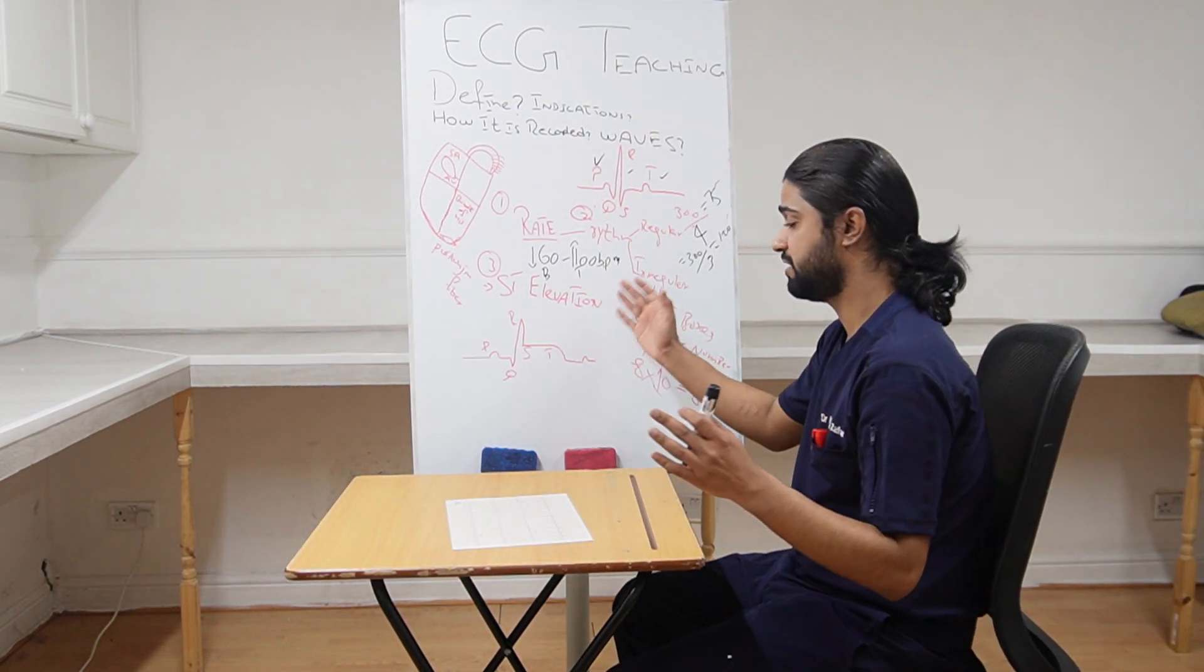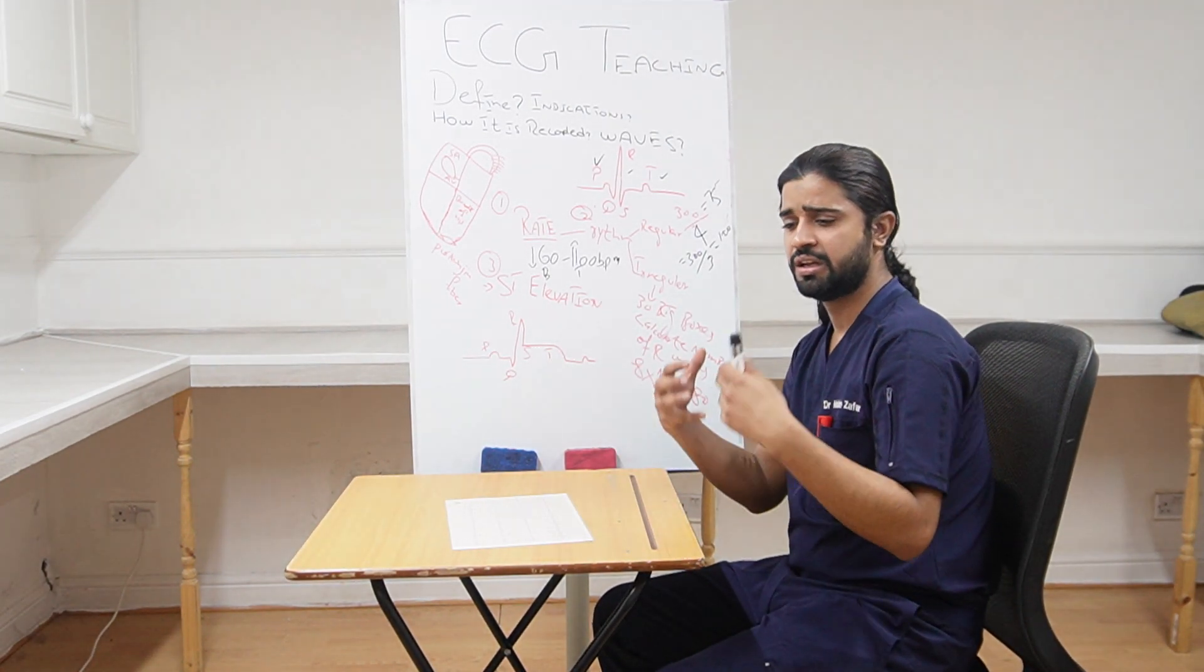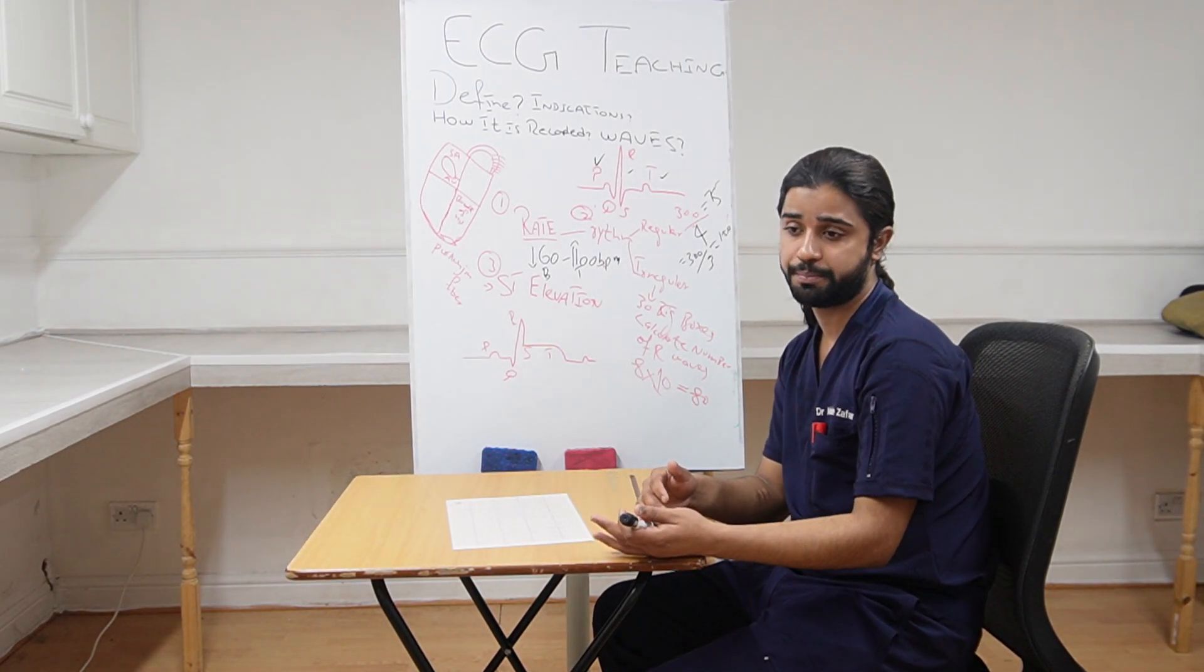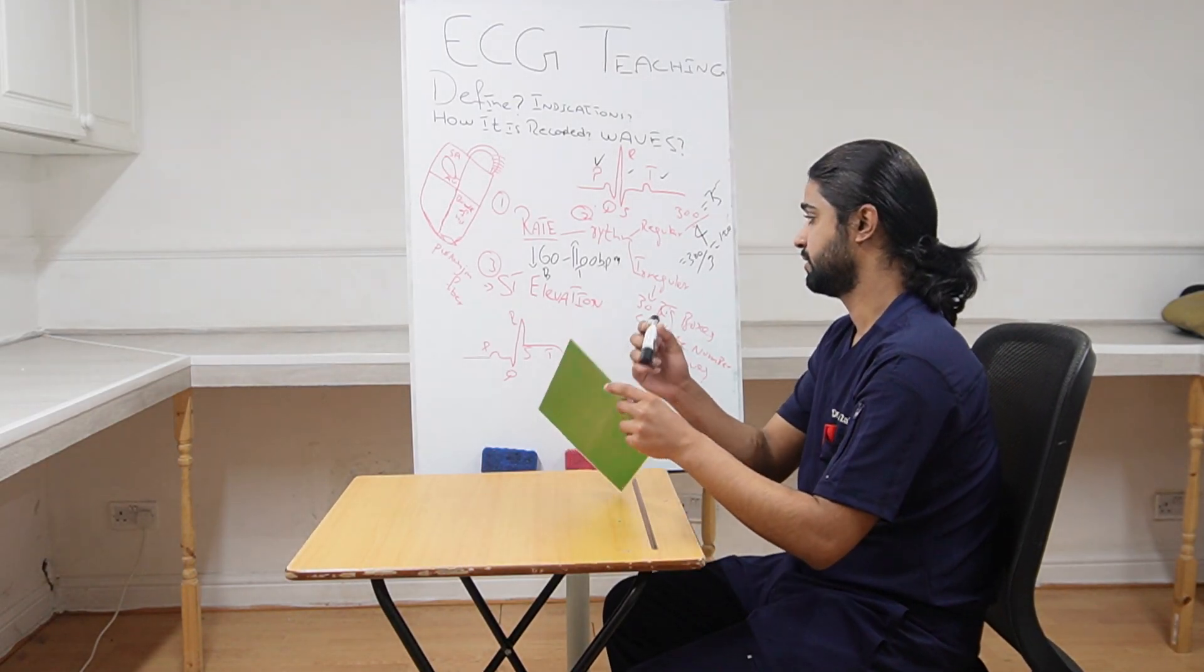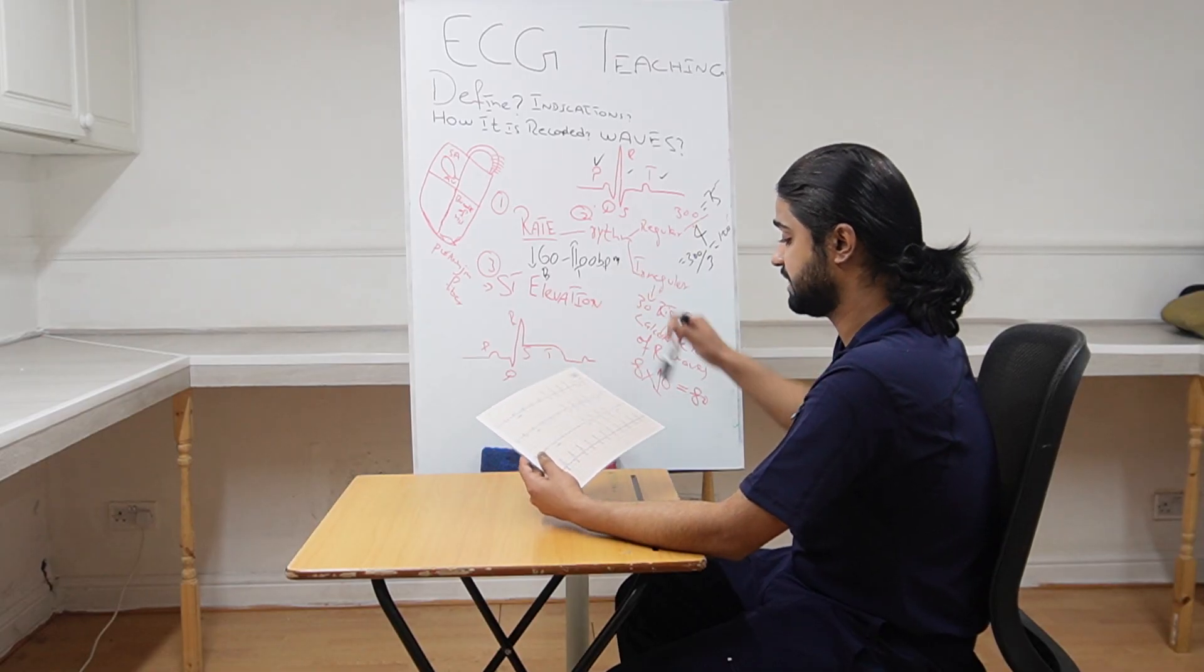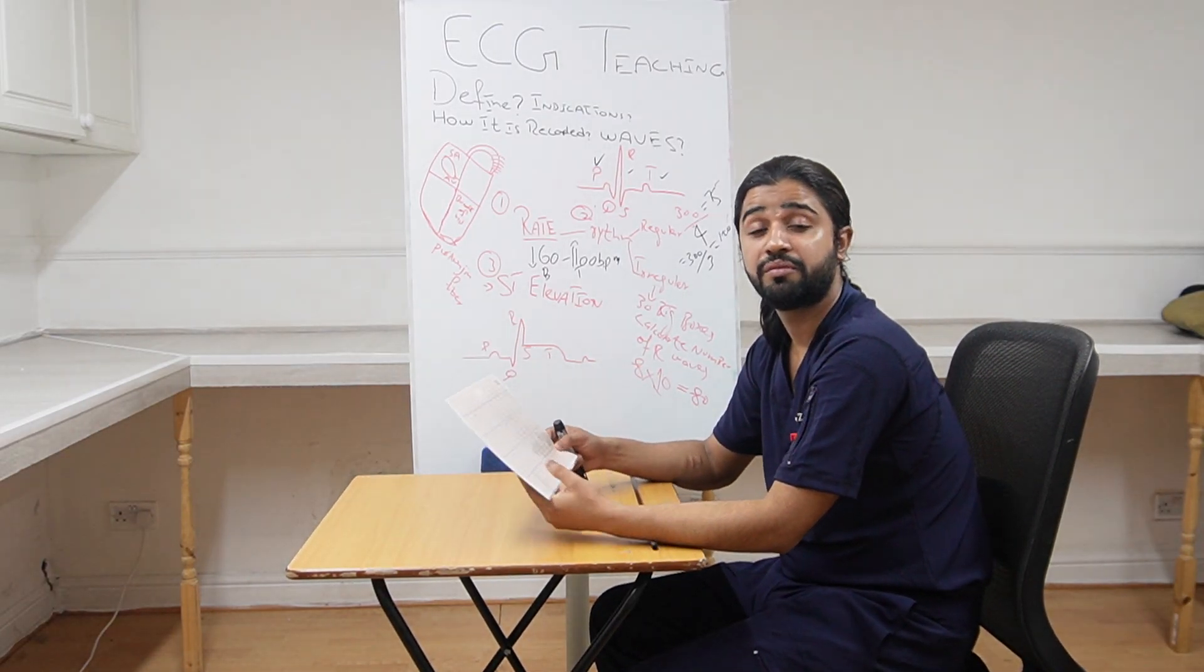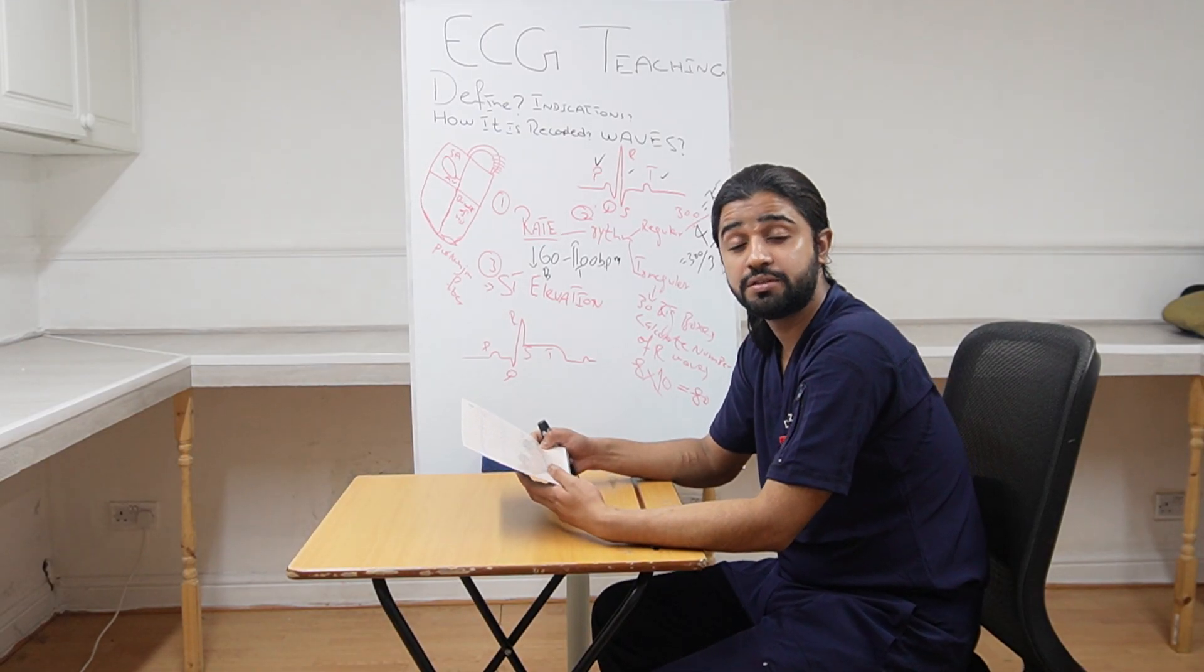And lastly is ST elevation. So if somebody presents to you with any chest pain that is radiating to the arm, to the jaw, shortness of breath and sweating, patient having some history of hypertension, of diabetes, and you find ST elevation in a patient like this, like S-T has been elevated from the baseline, it is here on this ECG as well. So this is an acute emergency, patient might be having a myocardial infarction. You need to inform your senior, patient might need emergency treatment.